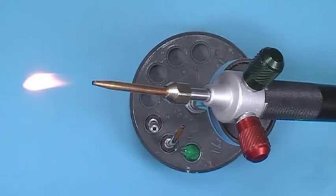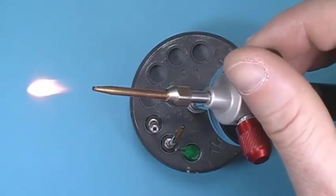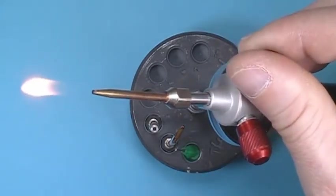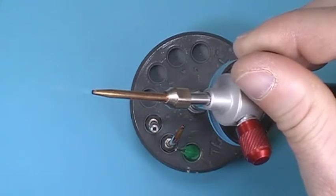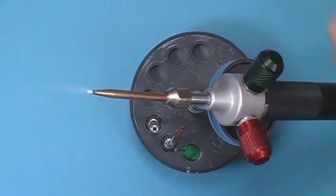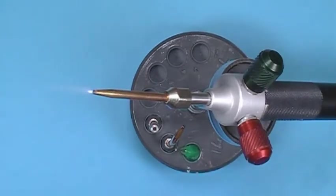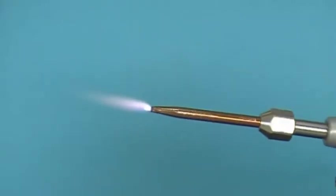Turn valve clockwise to decrease, counterclockwise increases gas output. Slowly open the oxygen torch valve counterclockwise until the flame is neutralized. This is accomplished by adding oxygen until the bright cone of the tip just reaches its shortest length. Too much oxygen will extinguish flame.